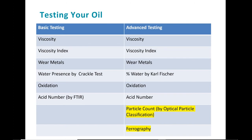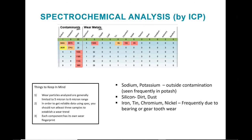Let's take a look at an analysis report, starting with the wear metal analysis as tested by ICP. A spectrochemical analysis measures the level of wear metals and concentration of additive elements, reported in ppm (parts per million), and provides an indication of the rates of wear of components and the depletion of additives. There are three things to keep in mind: wear particles analyzed are generally limited to 5 to 6 microns, which indicates particles as a result of wear but won't tell you the cause. You should run at least three samples to establish a wear trend, and each component has its own wear fingerprint. As you can see here, there's a high amount of iron, tin, chromium, and nickel wear, which can be indicative of bearing or gear tooth wear.